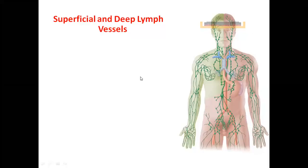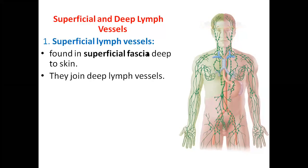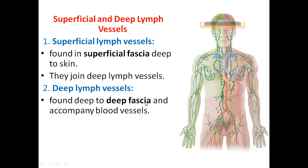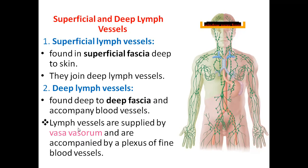Superficial lymphatic vessels are found in the superficial fascia deep to the skin; they join the deep lymphatic vessels. Deep lymphatic vessels are found deep to the deep fascia. In the dissection hall you will appreciate: just below the skin is the superficial fascia, along which superficial lymph vessels are distributed. As you go deeper, the deep fascia covers deep muscles, and along them are the deep lymph vessels. Lymph vessels are supplied by vasa vasorum and are accompanied by a plexus of fine blood vessels.